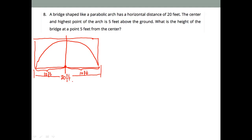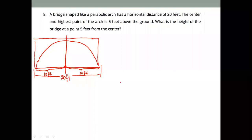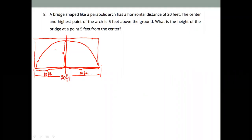The center and the highest point of the arc is 5 feet above the ground. So we have 5 feet above the ground. Therefore, this point is our vertex, which is x = 0 and y = 5.